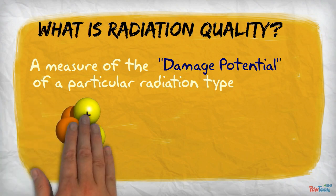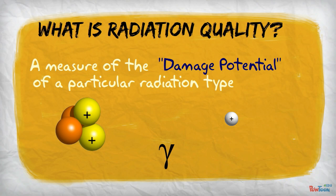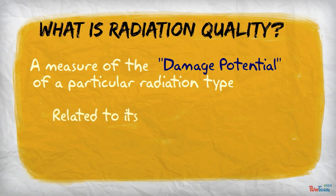This means that the different radiation types we have discussed, alphas, gammas, and positrons, for example, have differing abilities to cause damage to tissue. This damage potential is related to the radiation's size, charge, and energy.